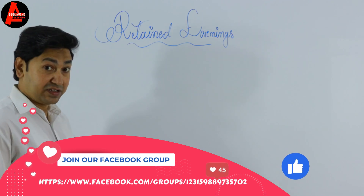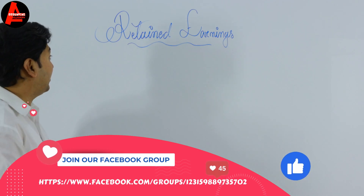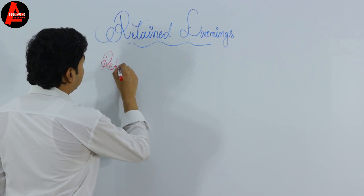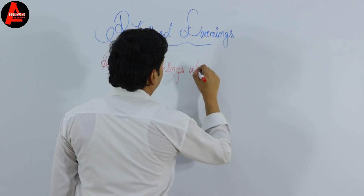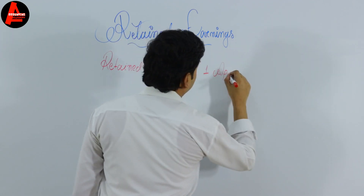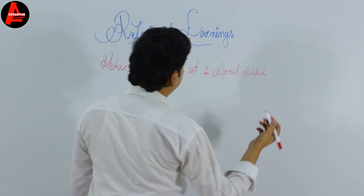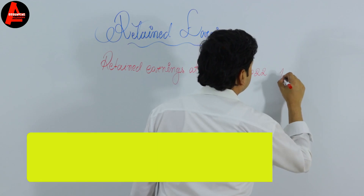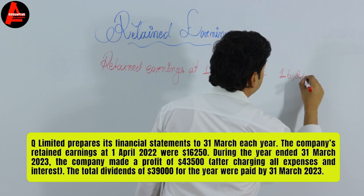First, we write the retained earnings opening balance. Retained earnings at 1st April 2022 — the amount is $16,250.